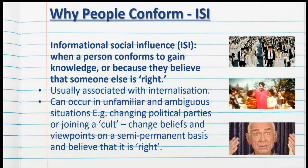Informational social influence is another reason why people conform, and it's usually associated with internalization, which is the deepest form of conformity. Informational social influence, or ISI, is when a person conforms to gain knowledge, or because they believe that someone else is right based on the information they have been given — hence the term.